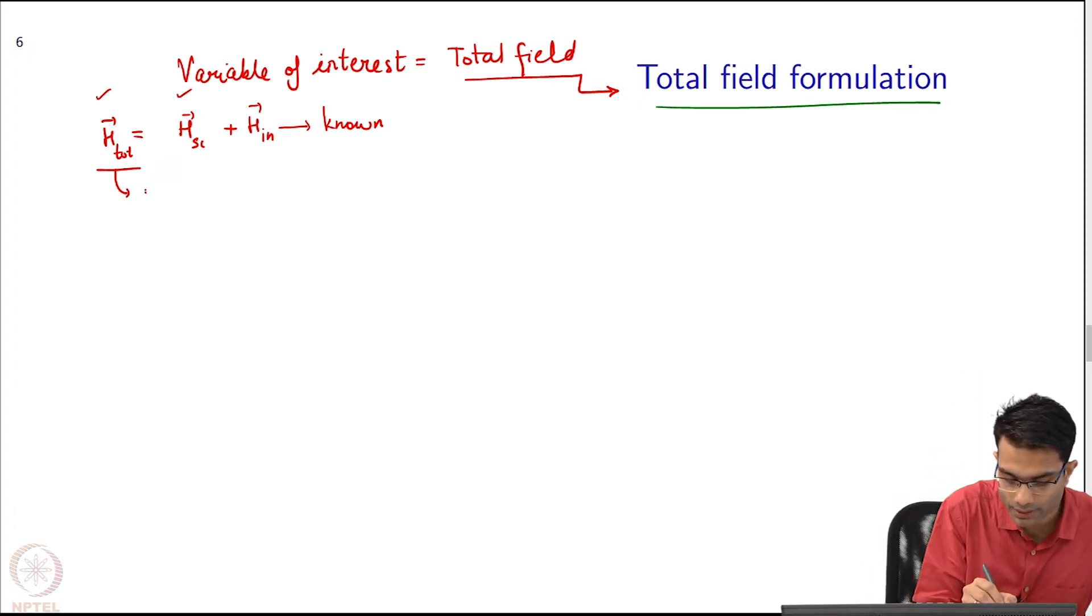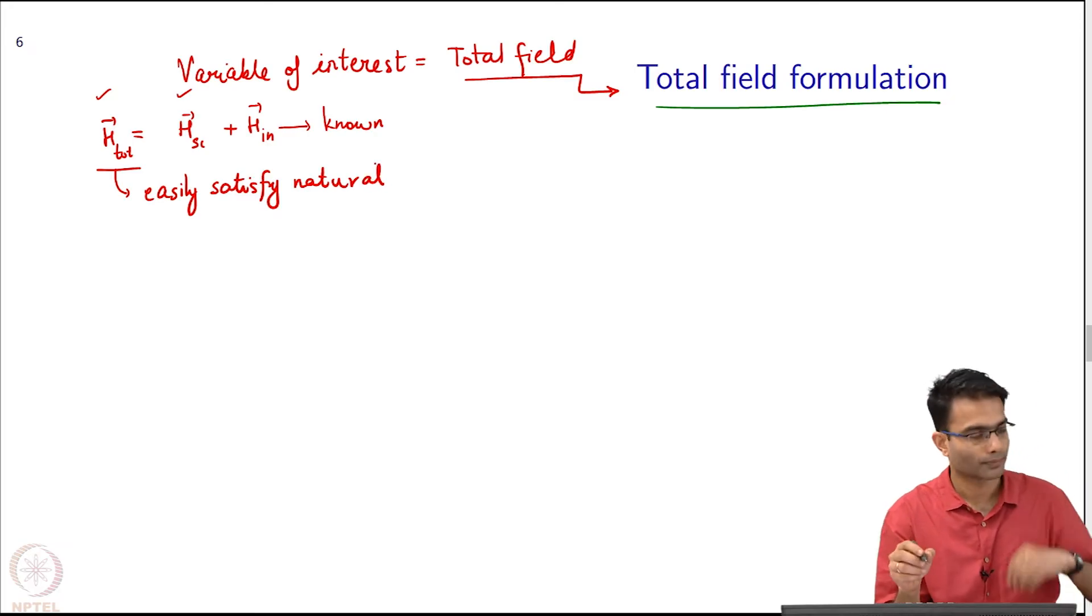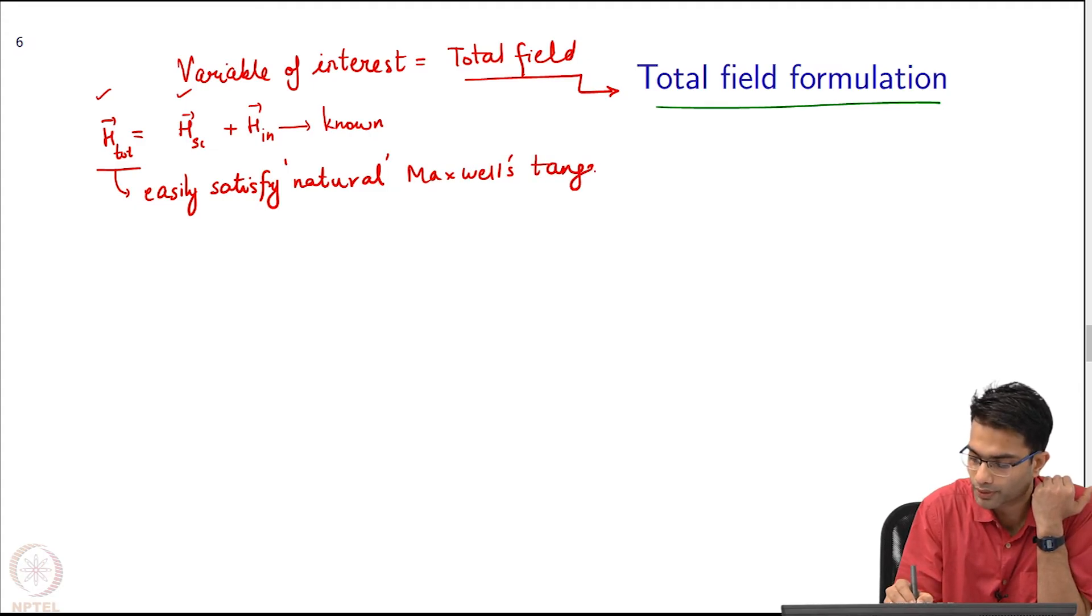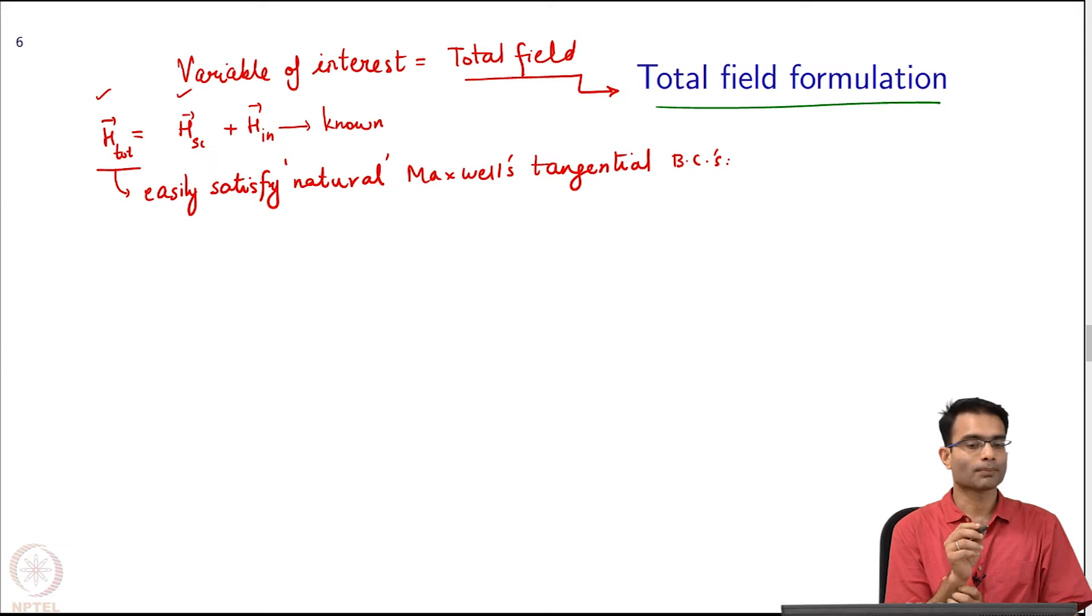So you can say that easily satisfy, let us call them natural Maxwell's tangential boundary condition, basically e tan is conserved, h tan is conserved.